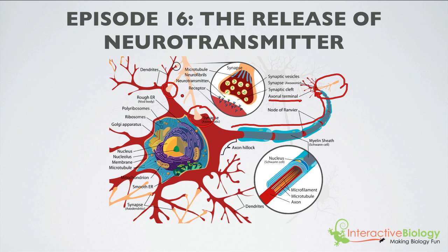Or glands, or organs. This is the way the nervous system communicates, and there needs to be these connections, and signals need to go from one neuron to the next. What I'm going to do is I'm going to zoom in on this connection here, and we're going to take a closer look at it.